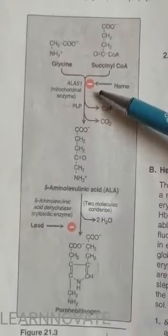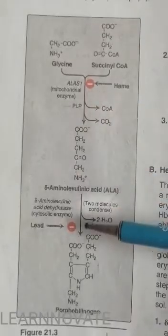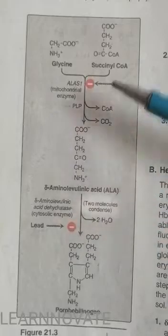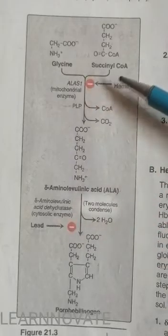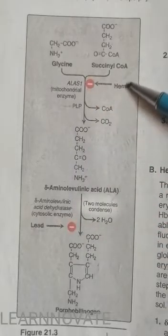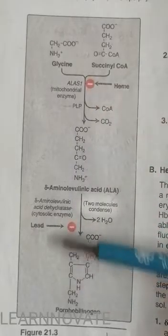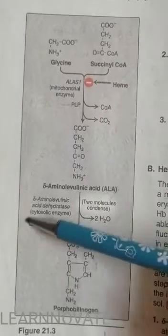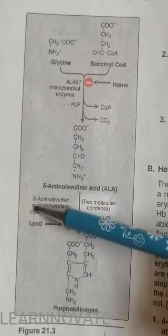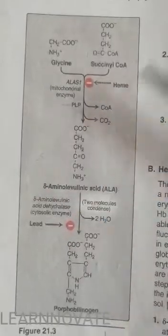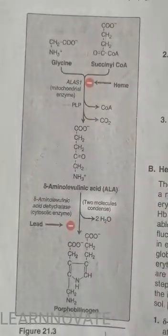There are certain inhibitors to note: in the first step, the inhibitor is heme, while in the second step the inhibitor is lead. We will discuss these inhibitors further in relation to porphobilinogen.